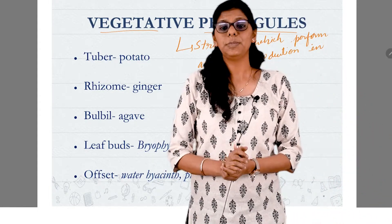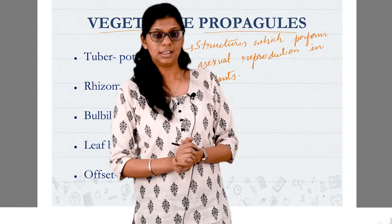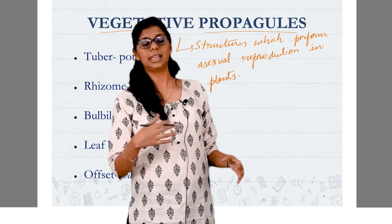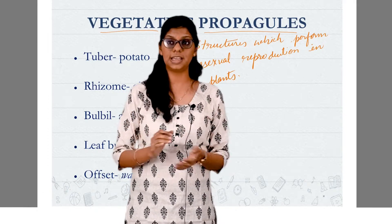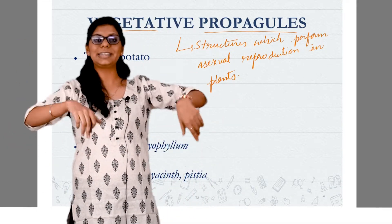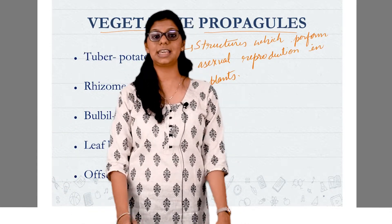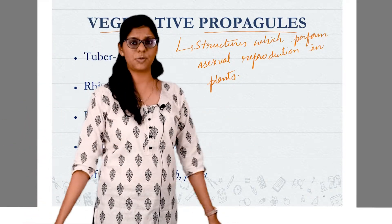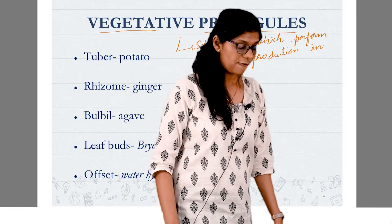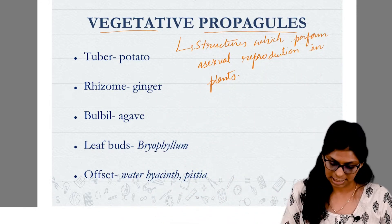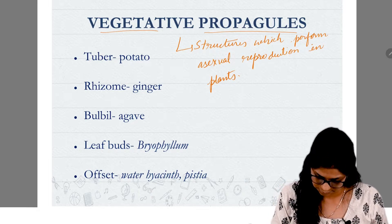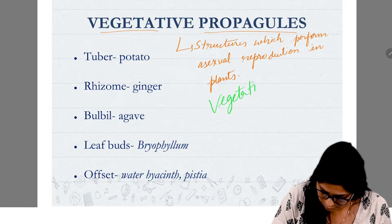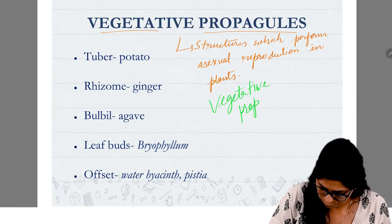Kids, we have seen asexual reproduction. We have seen various types: binary fission, then multiple fission, then budding. We have seen asexual structures. Now we will talk about plants. In plants, asexual reproduction — we don't say asexual reproduction, we say vegetative propagation.